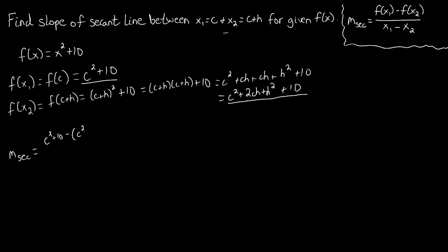We're going to subtract f of x2, which we found to be this. So we have minus the entire expression, c squared plus 2ch plus h squared plus 10, close parentheses, all over c, which is our x1, minus parentheses c plus h.